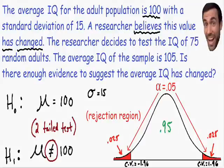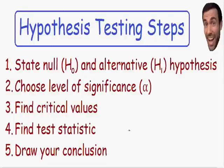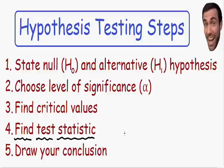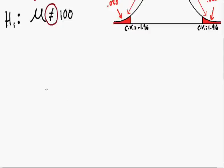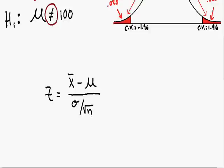That brings us to step number four: find the test statistic. We are going to find a z value for the given sample. We chose z because the population standard deviation is known. The formula for the z-test statistic is z equals x-bar minus mu, all divided by the population standard deviation sigma divided by the square root of the sample size n.